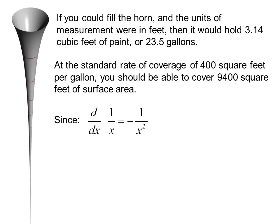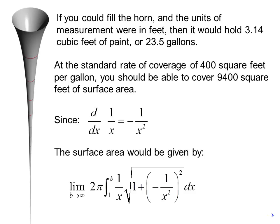Since d dx 1 over x equals negative 1 over x squared, the surface area would be given by the limit as b approaches infinity, 2 pi times the integral from 1 to b, 1 over x times radical 1 plus negative 1 over x squared, squared, dx.